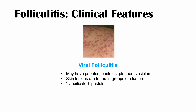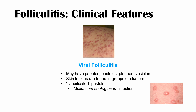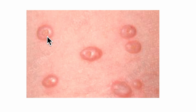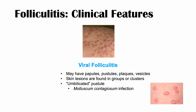In some viral folliculitis, you may see an umbilicated pustule. This is something we see in molluscum contagiosum infections — these skin lesions are umbilicated, meaning they have a little belly button. You can imagine that if these lesions affect the hair follicle, it can lead to inflammation of the hair follicle causing folliculitis. Viral folliculitis has a variety of appearances depending on the virus causing it.